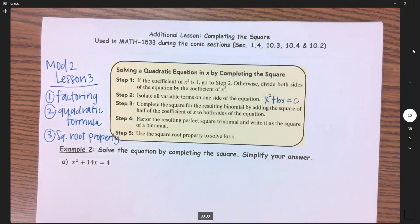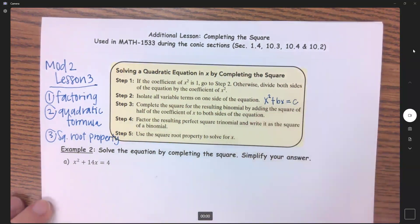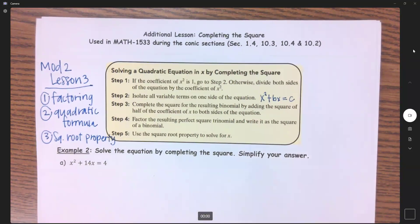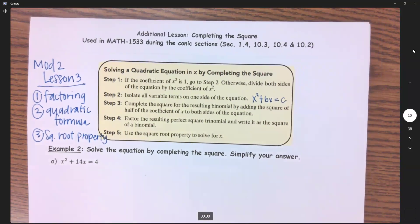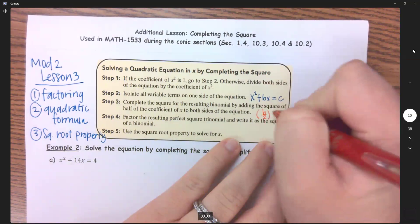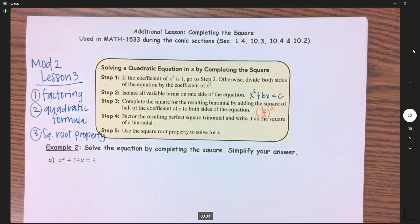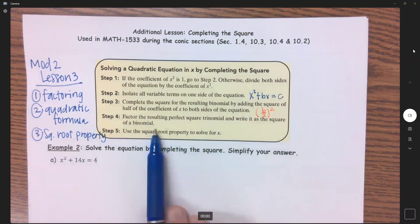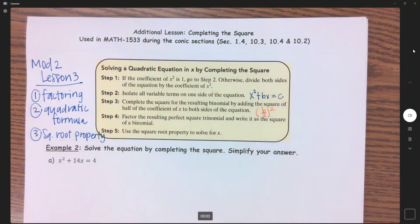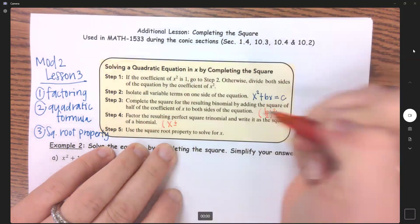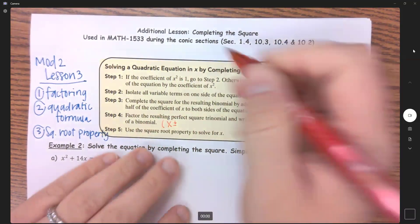Step 3 is to complete the square for the resulting binomial, which is this side here, by adding the square of half of the coefficient of b to both sides of the equation. So what that looks like is (b/2)².